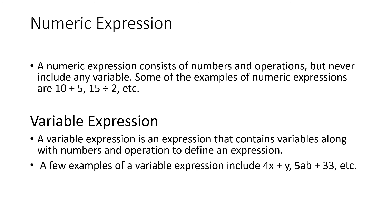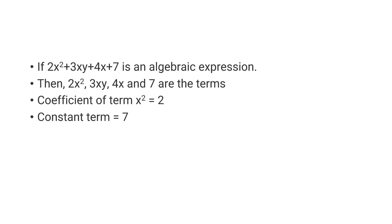Since these are very simple topics, I am not going into the details. You are given an example: if 2x² + 3xy + 4x + 7 is an algebraic expression, what is the coefficient of x² and which is the constant term? Since x² is standing along with 2, which is a fixed number, the coefficient of x² is 2, as there is no mathematical operation between x² and 2. And the constant term here is 7, because along with 7 there are no variables, so its value is fixed.